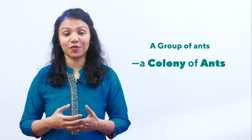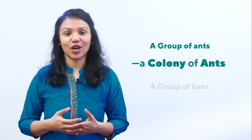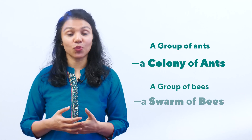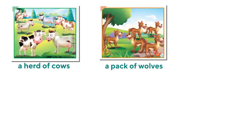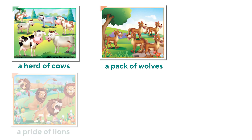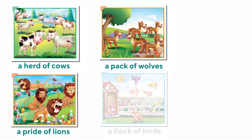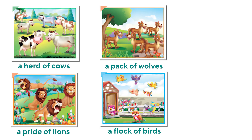There are special names for different kinds of groups of animals. For example, a group of ants is called a colony of ants. A group of bees is called a swarm of bees. Let's look at the other names: a herd of cows, a pack of wolves, a pride of lions, a flock of birds.